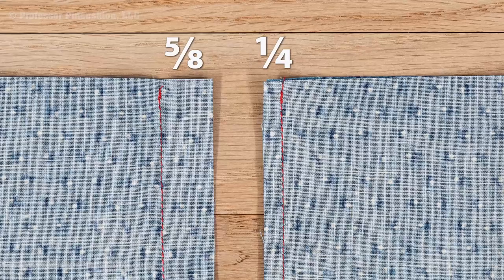Secondly, with garment sewing, the seam allowance gives the sewer wiggle room in terms of making alterations. Maybe the garment fits perfectly but it's just a little tight in the bust line area. In this particular area, you have the room to sew a smaller seam allowance — instead of doing 5/8 of an inch, you do a quarter inch seam allowance.